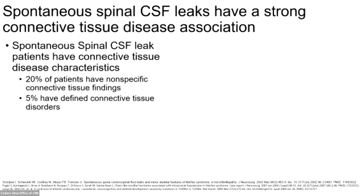First I wanted to talk about why we're interested in this connection. We know that patients with spontaneous spinal CSF leaks tend to have a preponderance of connective tissue disease characteristics, where about 20% have nonspecific connective tissue findings, such as tall stature, arachnodactyly or long fingers, and stretchy skin, among other things.